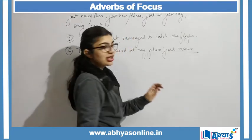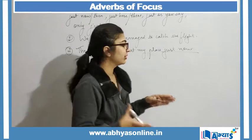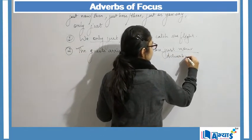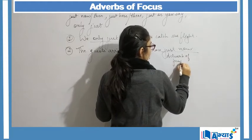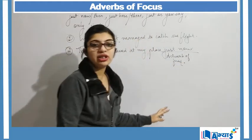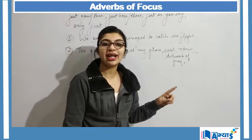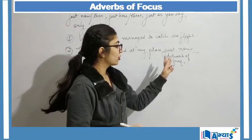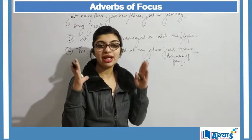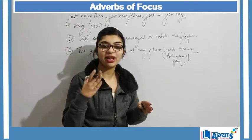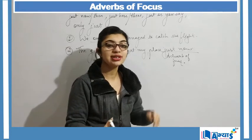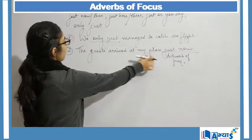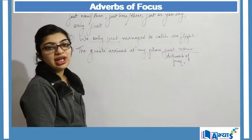In the sentence 'the guest arrived just now', 'just now' means I am focusing on that particular point in time. I am not talking about any time in general; I am talking about a time I am specially pointing at. So 'just now' is again my adverb of focus — I am focusing on that time that has occurred just now. This is where we can make use of the adverb 'just'.